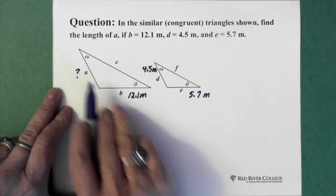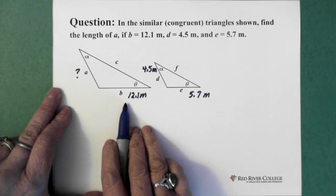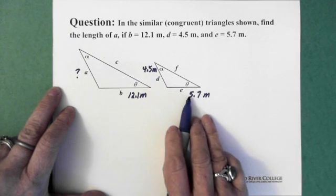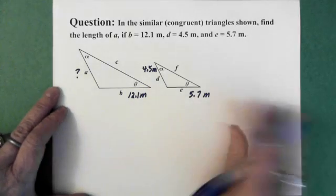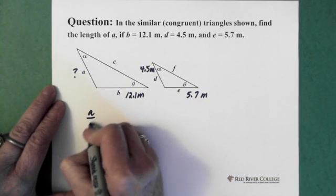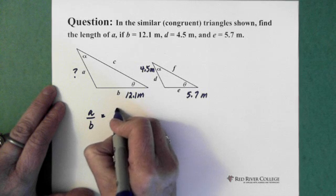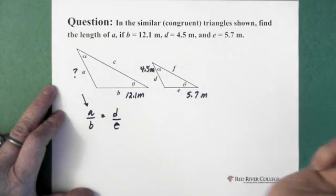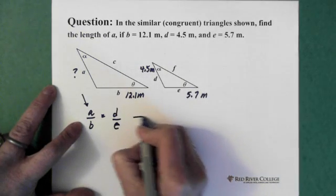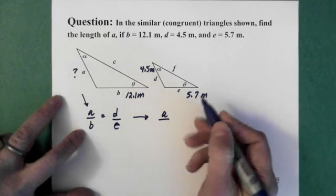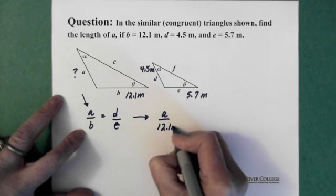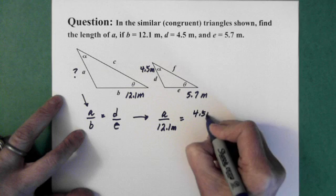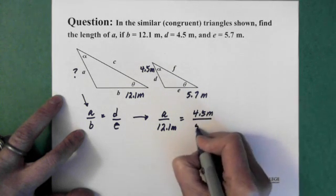So this side with respect to this side of this triangle has to equal D or the length of D with respect to the length of E. So we can say A divided by B has to equal D divided by E. And what we're looking for is A. So at this point we can just set up our equation A over B which is 12.1 meters equals D which is 4.5 meters over E which is 5.7.